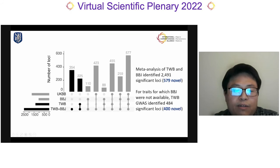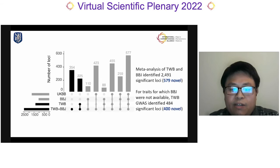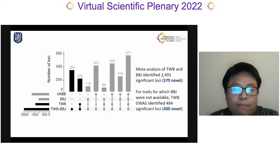To maximize power for genetic discovery in East Asian populations, we meta-analyzed GWAS from TWB and BBJ for 23 traits. We identified a total of 2,491 loci associated with the 23 traits, among which 579 were novel. For the 13 traits for which BBJ GWAS were not available, we identified an additional 484 genome-wide significant loci using TWB samples only, among which 400 were novel.